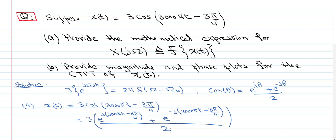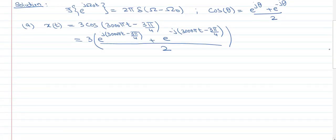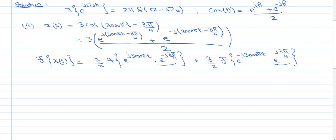Now I can find the Fourier transform of this expression by using the linearity of the Fourier transform. The Fourier transform of x(t) is (3/2) times the Fourier transform of e^(j3000πt)·e^(−j3π/4) plus (3/2) times the Fourier transform of e^(−j3000πt)·e^(j3π/4). The phase terms are constants with respect to time, so by linearity I can pull them out.